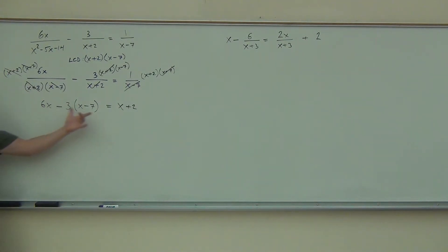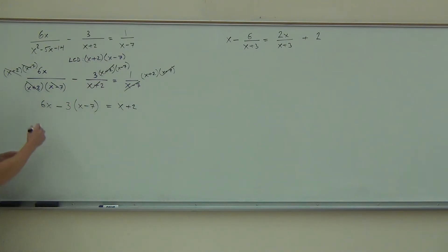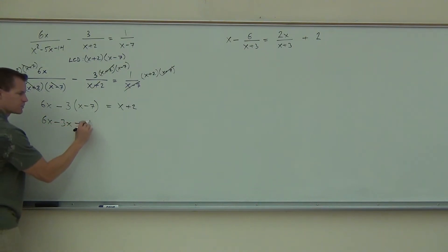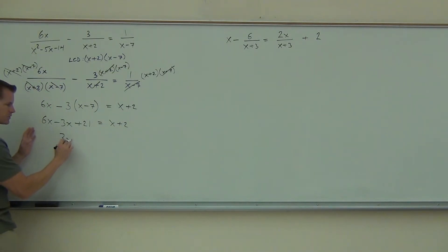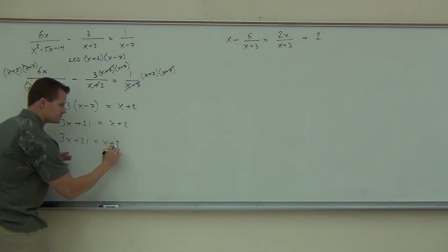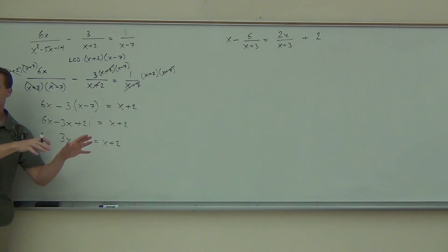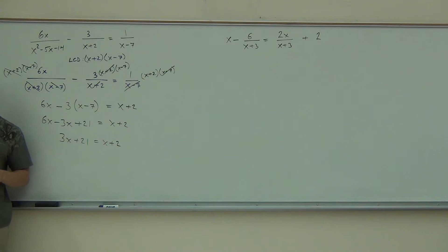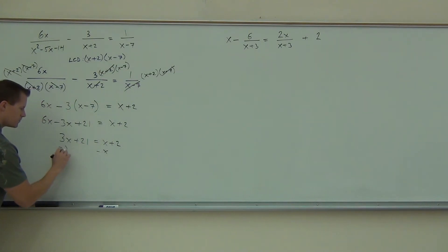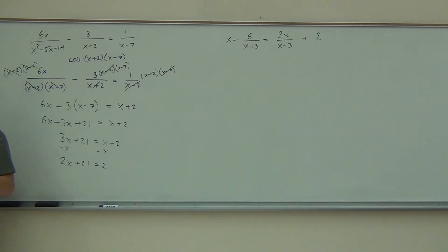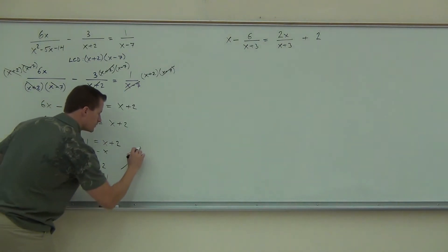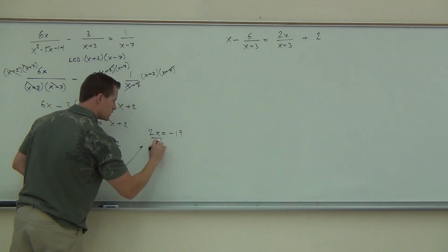And now we're kind of on the home stretch. This is a very basic problem considering we started with that. We're going to distribute — so 6X minus 3X, and we're going to get plus 21. Equals X plus 2. We're going to combine some like terms — here we have 3X plus 21 equals X plus 2. Do we have an X squared? No. So do I have to get everything to one side? No. So we're going to subtract the smaller variable. From there it's a piece of cake — we get rid of a constant, and our last step is to divide. Subtract 21, divide by 2.